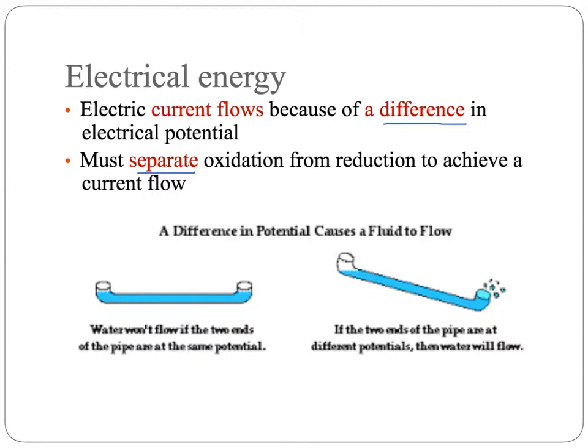Water is used often to illustrate electricity and so I just grabbed this little illustration that says water is not going to flow unless there's a difference in the potential between the two ends of the pipe and there needs to be a similar difference in potential between the electrical potential at two ends of a wire or electricity will not flow. When it comes to the galvanic cells then we have to separate our oxidation from our reduction.